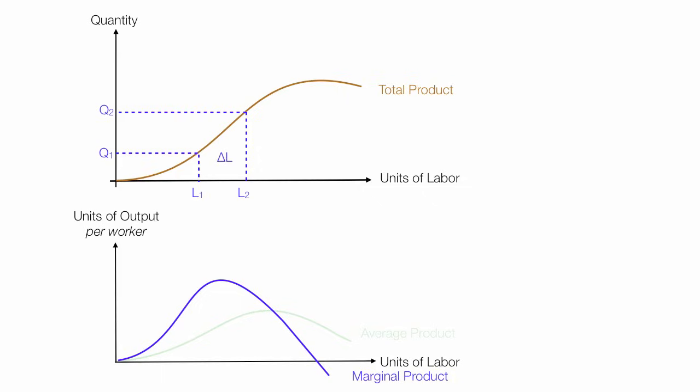If I add some labor, how much does quantity go up or change? By the way, that little triangle, that little delta, means change in. So, marginal product is the change in quantity divided by the change in labor, which is equal to Q2 minus Q1 divided by L2 minus L1. Then, this is all equal to marginal product.